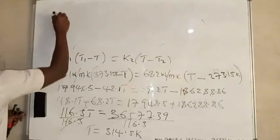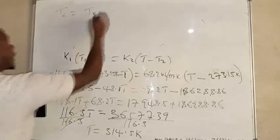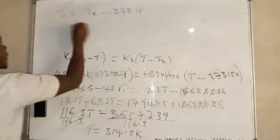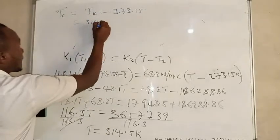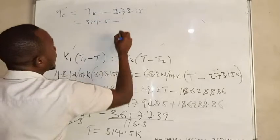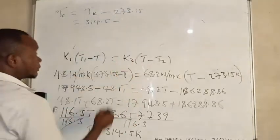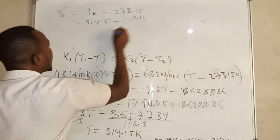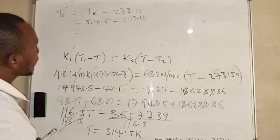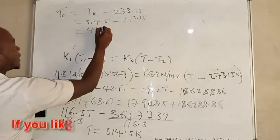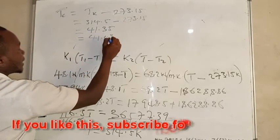Converting back to degrees Celsius using Tc equals Tk minus 273.15: we have 314.5 minus 273.15, which equals 41.35 degrees Celsius. Rounding off, the temperature of the solid interface is approximately 41.4 degrees Celsius.